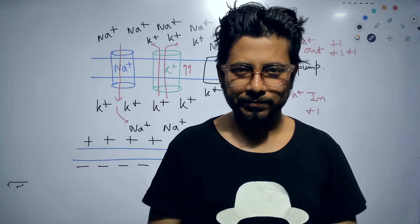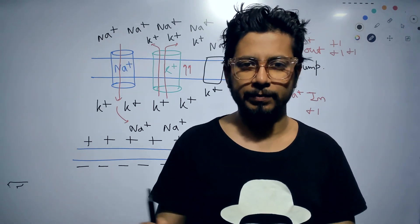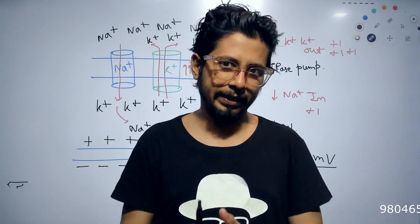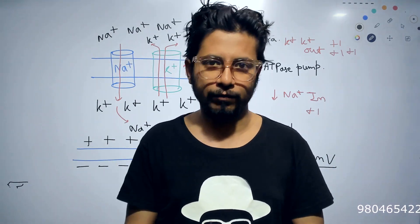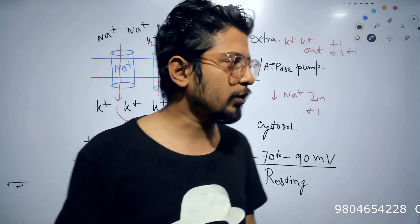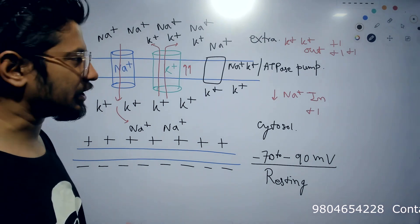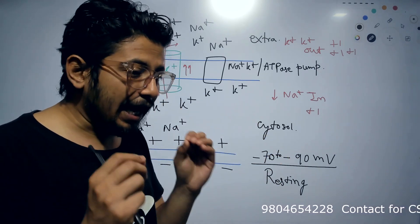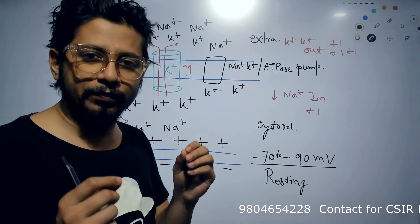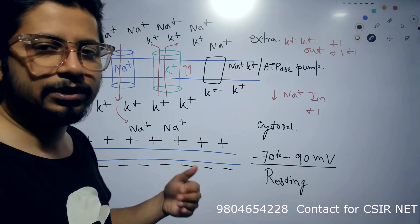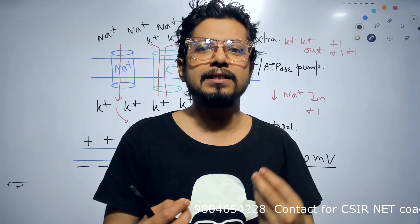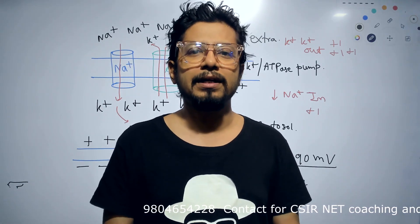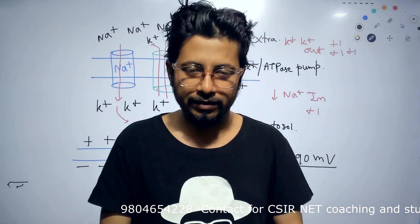Welcome back to Shomu's Biology. In this lecture, I'm going to talk about action potential of the cell membrane. When you put an electrode through the membrane, we observe a voltage gradient across the membrane. In the resting state, that voltage is minus 70 millivolts, known as resting membrane potential. The resting membrane potential exists when the cell is not under influence of any ligand, chemical, or voltage.